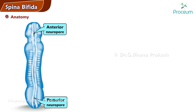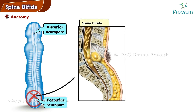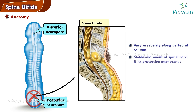However, in cases where the arches fail to fuse properly, a condition known as spina bifida occurs. This failure of fusion can leave a gap varying in severity along the vertebral column. This condition is frequently associated with maldevelopment of the spinal cord and its protective membranes, potentially leading to various neurological complications.